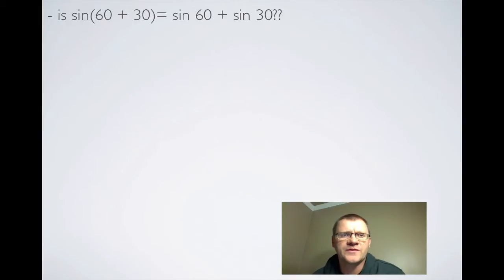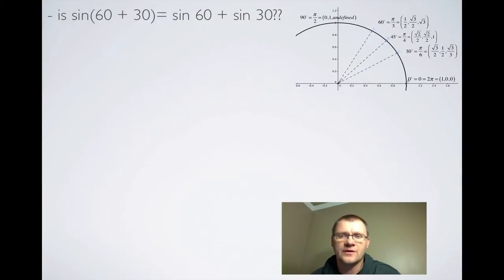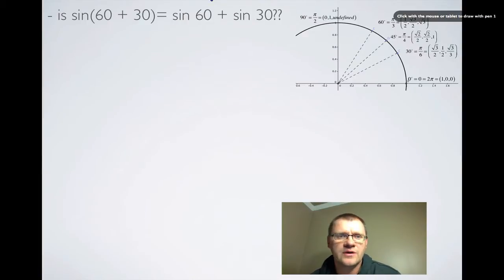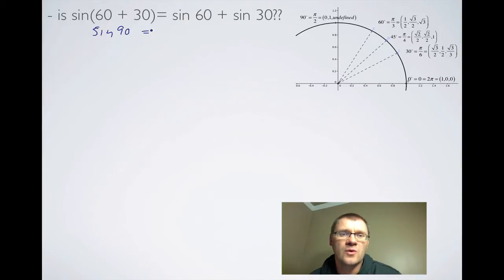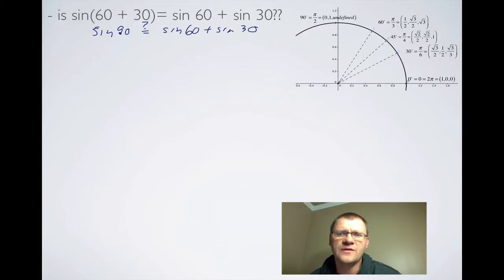We'll start with a question: is sine of 60 plus 30 the same as sine 60 plus sine 30? To answer that question, we'll just go to our unit circle. We're looking for sine(60+30), which we know is the same as sine 90. We'll put a question mark over the equal sign as sine 60 plus sine 30. Sine of 90 is our second coordinate on the unit circle — sine is always the second coordinate — so we're saying 1.